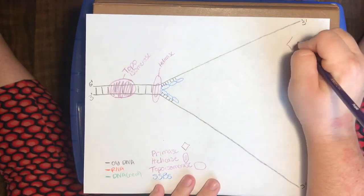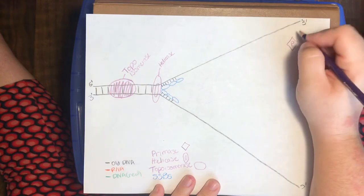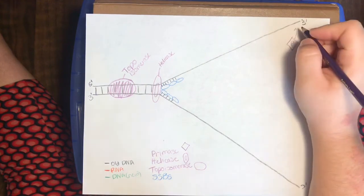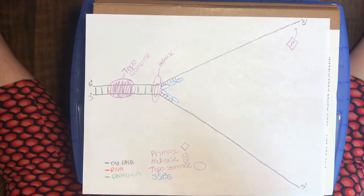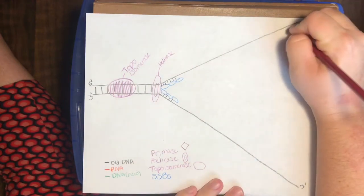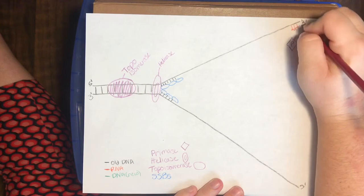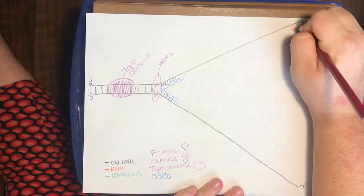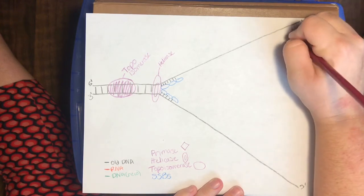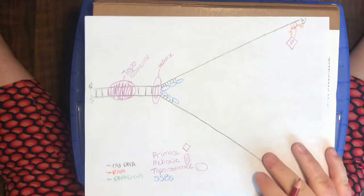And primase, we're going to label it with a P, is going to come in here and lay down some RNA primers. That RNA thing is really important. You're probably thinking, we're making DNA, why are you adding RNA? And this RNA is going to be made in a complementary and anti-parallel fashion to the original DNA strand.